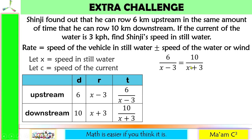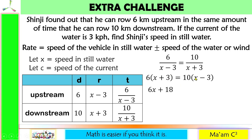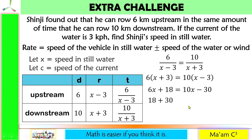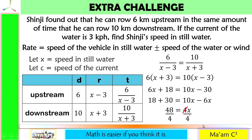Using cross multiplication: 6 times (x plus 3) equals 10 times (x minus 3). Expanding: 6x plus 18 equals 10x minus 30. Combining like terms: 18 plus 30 equals 48, and 10x minus 6x equals 4x. So 4x equals 48, and dividing both sides by 4 gives x equals 12.